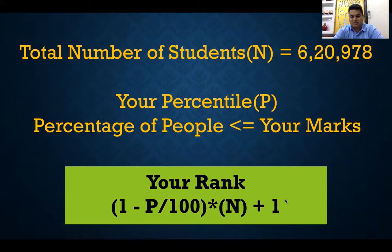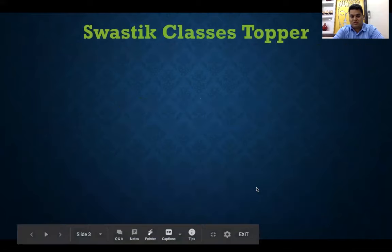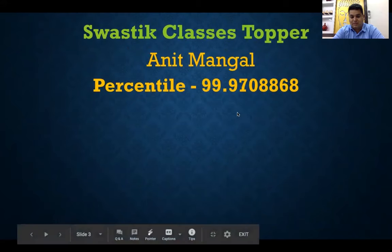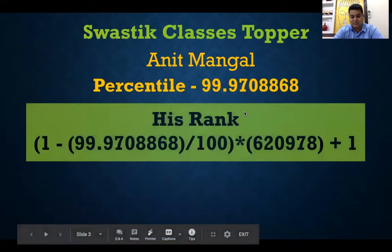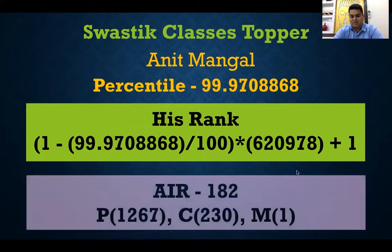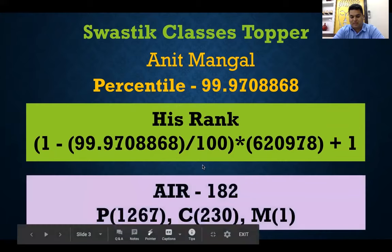For example, the topper in our batch is Anit Mangal. His overall percentile is 99.99708868. If we calculate his rank, we put it as 1 minus 99.99708868 divided by 100, into the total number of students, plus one. By this, his All India Rank comes out to be 182.